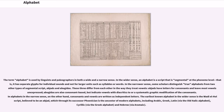The term alphabet is used by linguists and paleographers in both a wide and a narrow sense. In the wider sense, an alphabet is a script that is segmental at the phoneme level — it has separate glyphs for individual sounds and not for larger units such as syllables or words. In the narrower sense, some scholars distinguish true alphabets from two other types of segmental script, abjads and abugidas. These three differ from each other in the way they treat vowels. Abjads have letters for consonants and leave most vowels unexpressed. Abugidas are also consonant-based, but indicate vowels with diacritics or a systematic graphic modification of the consonants. In alphabets in the narrow sense, consonants and vowels are written as independent letters. The earliest known alphabet in the wider sense is the Wadi el-Hol script, believed to be an abjad, which through its successor Phoenician is the ancestor of modern alphabets, including Arabic, Greek, Latin via the old Italic alphabet, Cyrillic via the Greek alphabet, and Hebrew via Aramaic.